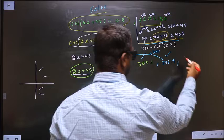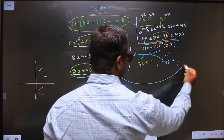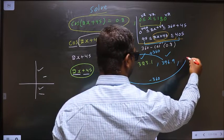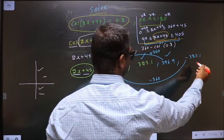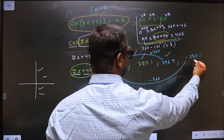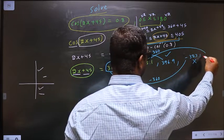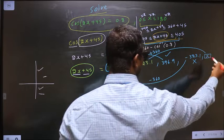Now if I subtract 360 from this, I get -323.1. That does not lie in the interval, so you reject it. Now if I add 360 here, this value does not lie in the interval, so reject it.